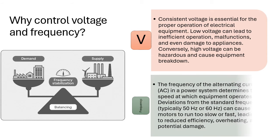Frequency: the frequency of the alternating current (AC) in a power system determines the speed at which equipment operates. Deviations from the standard frequency, typically 50 Hz or 60 Hz, can cause motors to run too slow or fast, leading to reduced efficiency, overheating, and potential damage.